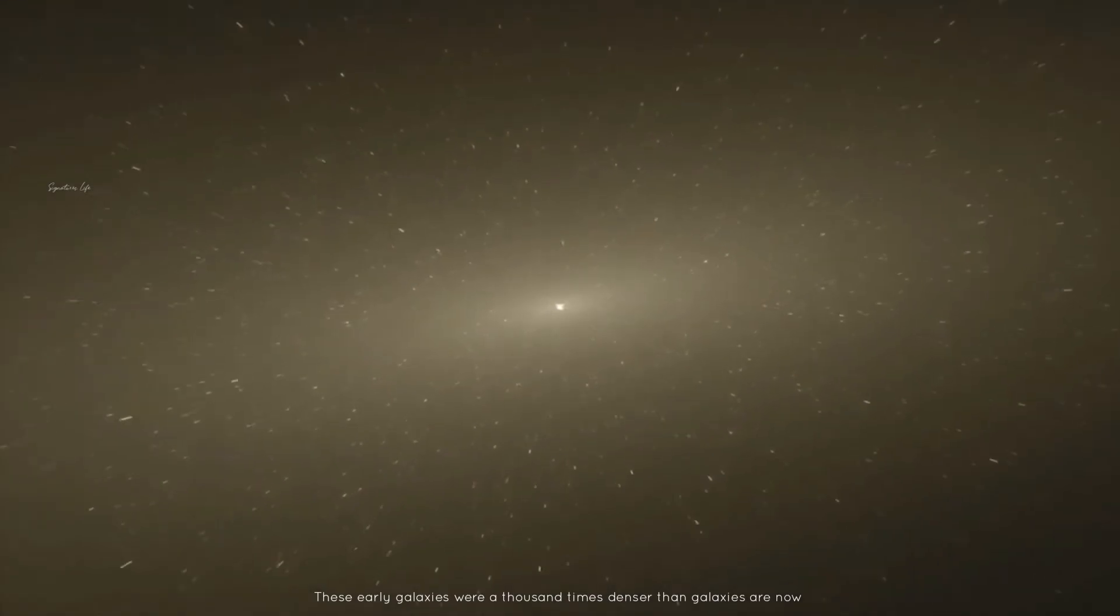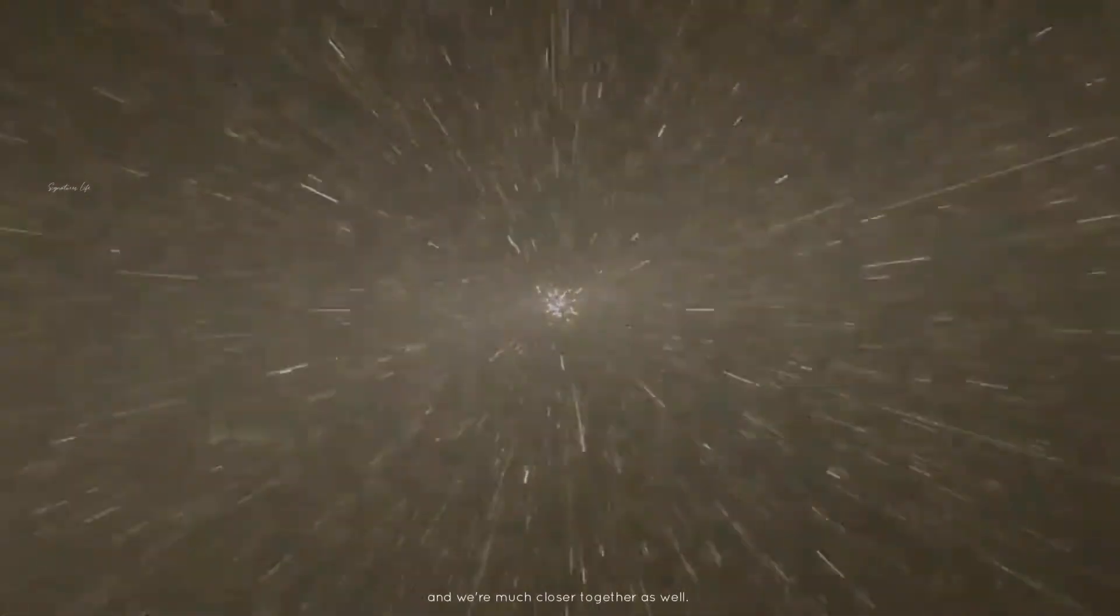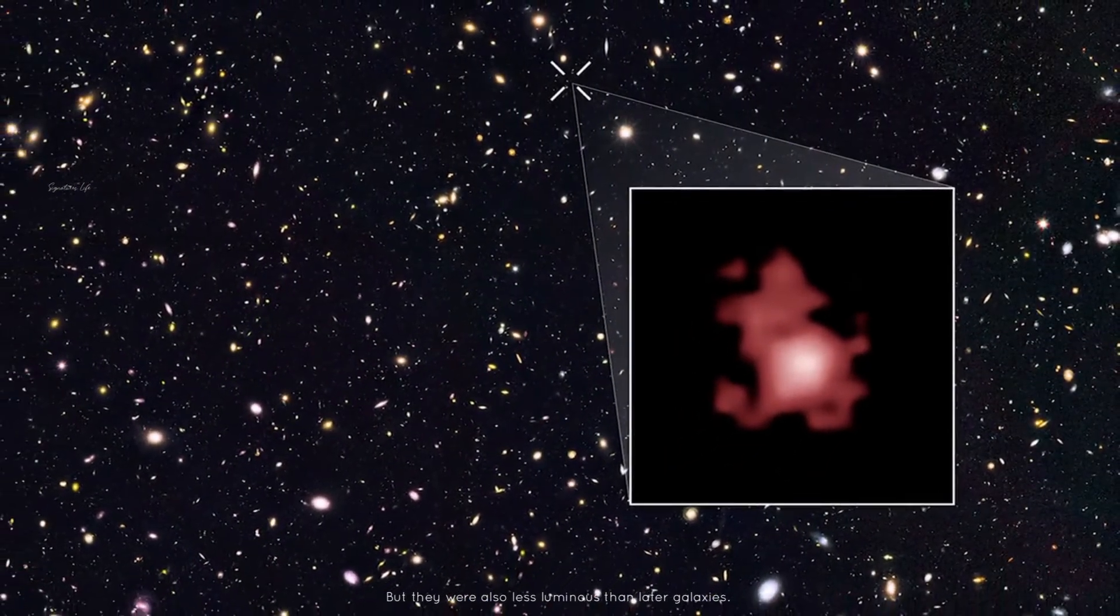These early galaxies were a thousand times denser than galaxies are now and were much closer together as well, but they were also less luminous than later galaxies.